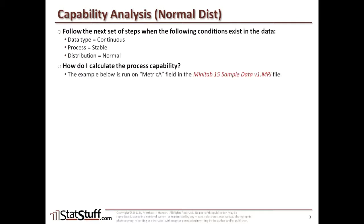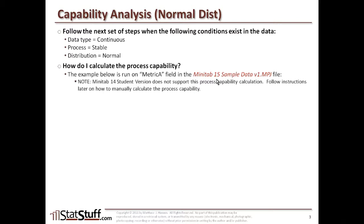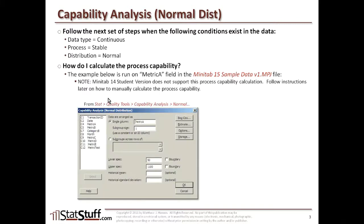The example we're going to use is from the sample data set on the website, and we're going to be using metric A as the field in question. This is running Minitab version 15 on the sample data set. This particular feature is not available in the student version of Minitab 14, but you'll be able to calculate the same process capability metrics a little bit later in this lesson. When you go into Stat, Quality Tools, Capability Analysis, and select Normal, this is the dialog box that appears.